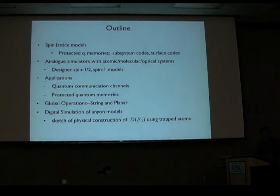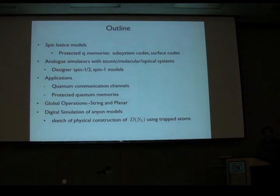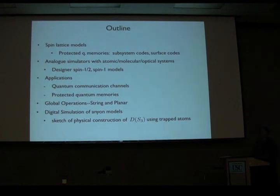In particular, I want to focus on spin lattice models — spins in a regular array with interactions among small neighborhoods of spins. I'll be focusing on ways to implement subsystem codes or surface codes, at least some fairly simple versions of the same.